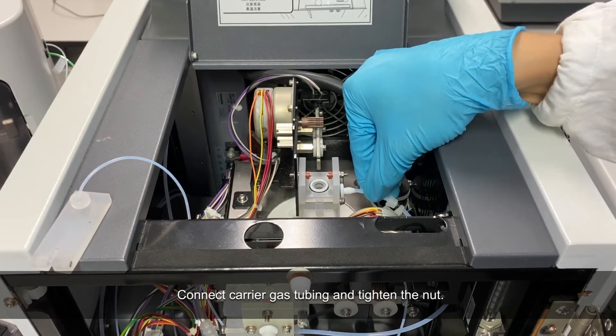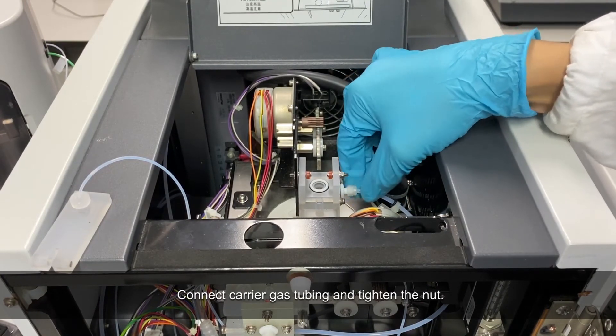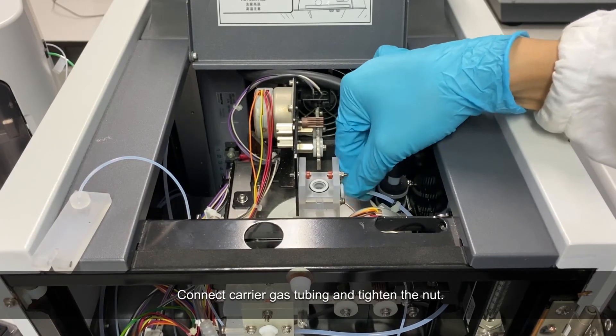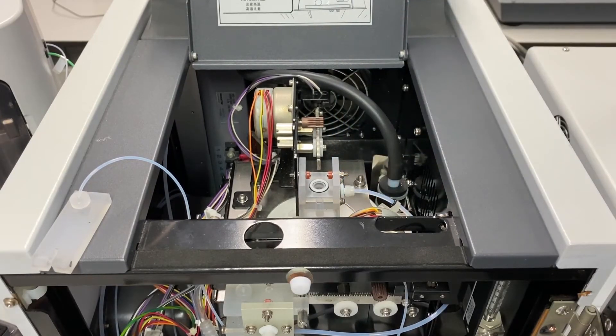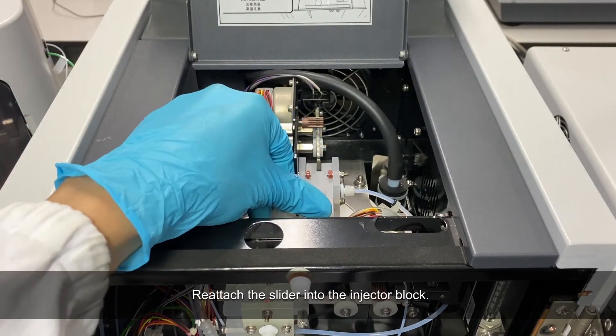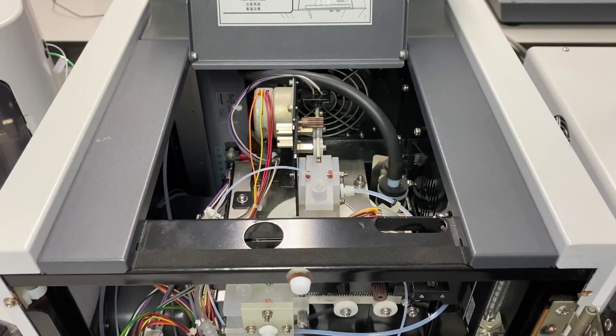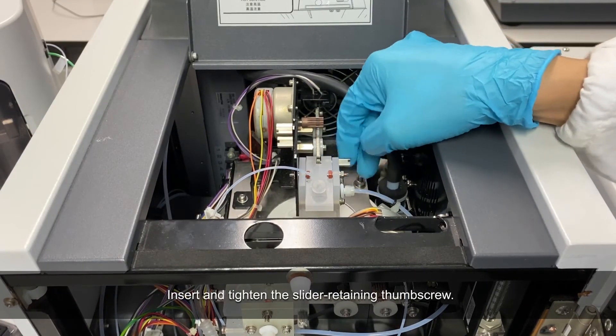Connect the carrier gas tubing and tighten the nut. Reattach the slider into the injector block. Insert and tighten the slider retaining thumb screw.